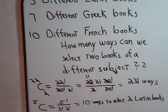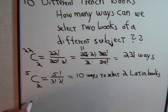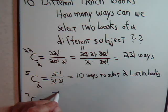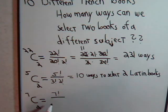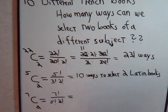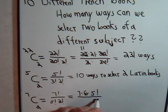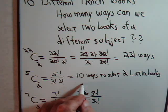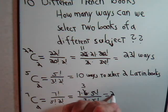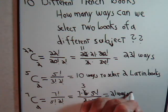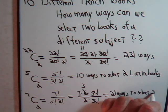We have seven Greek books. How many different ways can we pick out two of them? That's C(7,2), which equals 7 factorial divided by 5 factorial times 2 factorial. Seven factorial is 7 times 6 times 5 factorial, divided by 5 factorial times 2 — those cancel — giving us 7 times 3, which is 21 ways to select two Greek books.